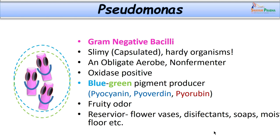It is important to remember that Pseudomonas organisms are very hardy and can survive anywhere in the hospital in moist areas — in toilets, sinks, flower vases, soaps, disinfectants. It is an obligate aerobe, a non-fermenter, and oxidase positive — which differentiates it from Acinetobacter. It produces diffusible pigments — pyocyanin, pyoverdin, and pyorubin — and was first recovered from blue pus. These organisms produce a typical fruity odour, which is why some burn wards have that characteristic smell.